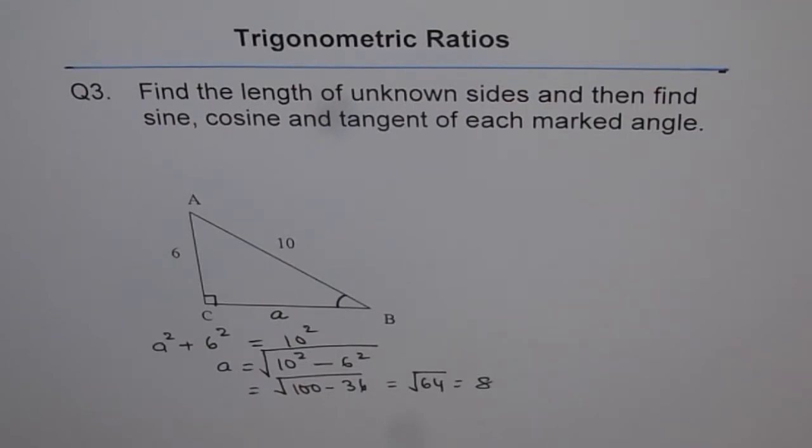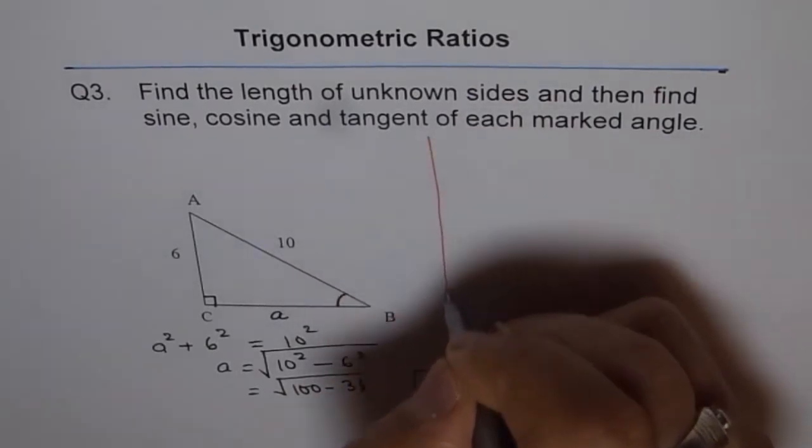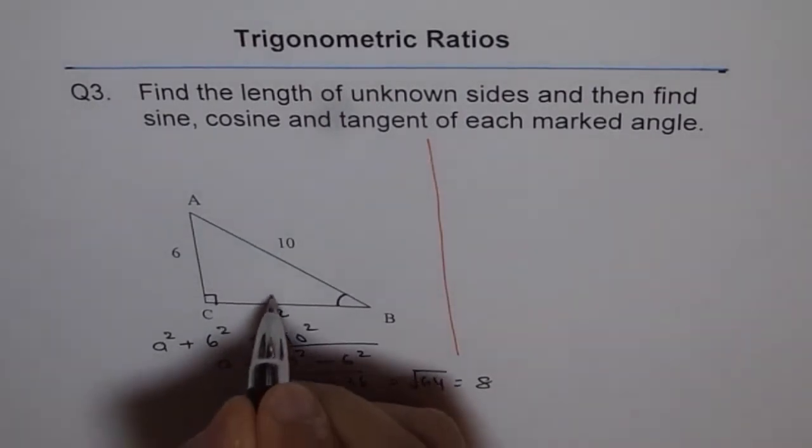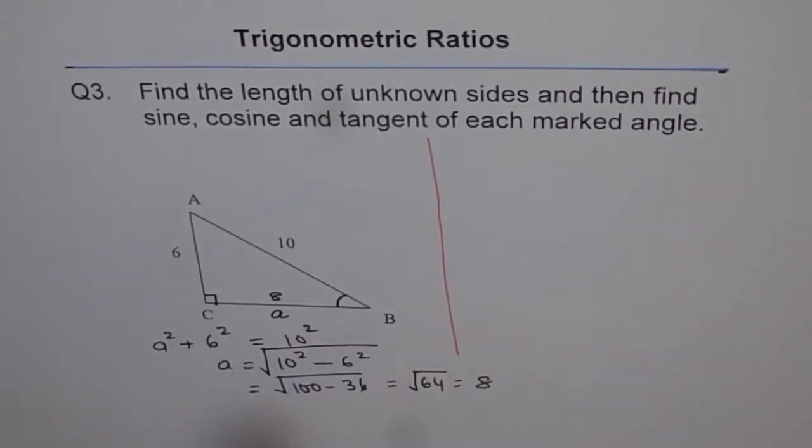We know the sides now. Let me find out what the trigonometric ratios are. I will write 8 here for CB.